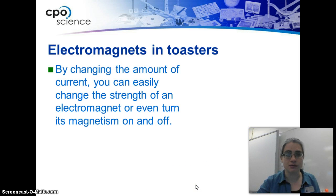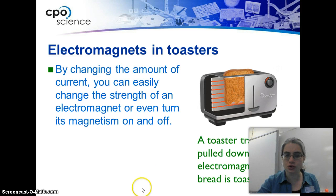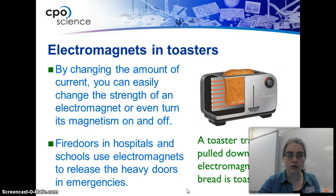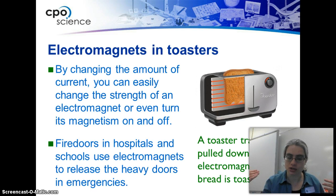Electromagnets are used for a lot of different things. We've seen them in dump yards where they are on a crane and can actually lift a car and then drop it. We also use electromagnets in toasters. By changing the amount of current, you can easily change the strength of an electromagnet or even turn it on and off. A toaster tray is pulled down by an electromagnet while bread is toasting, and when it's done toasting, the electromagnet turns off and the tray is released. Fire doors in hospitals and schools also use electromagnets to release the heavy doors in emergencies — our fire doors are braced by magnets, and when that current goes off, the doors automatically close.